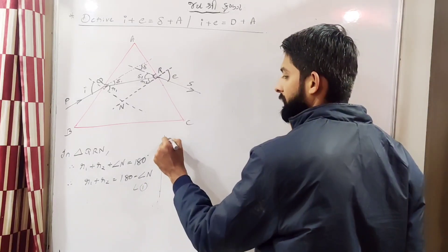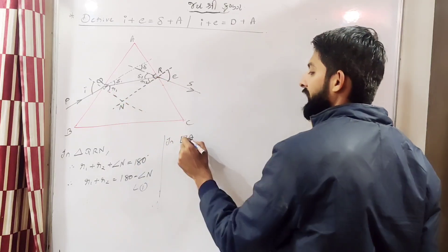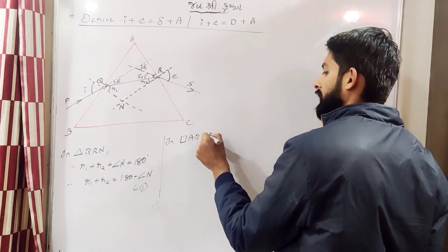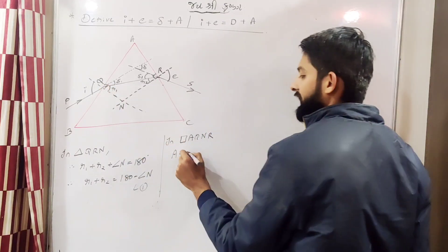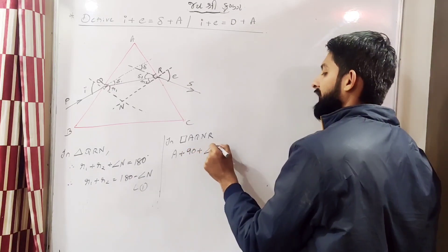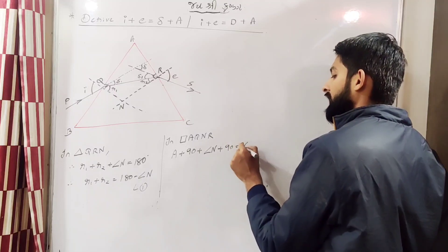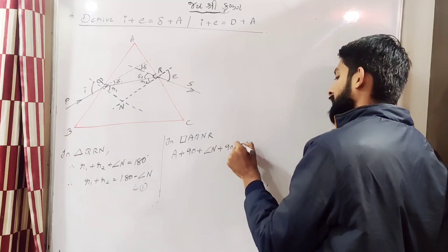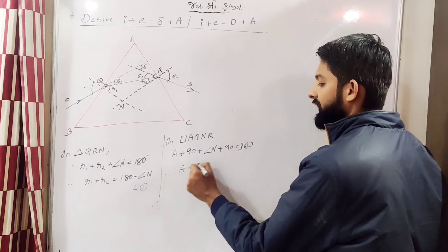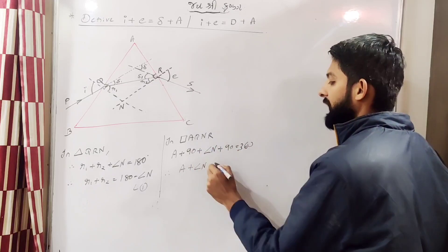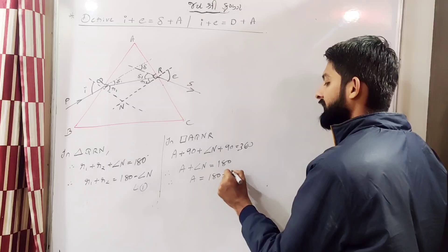Now consider the quadrilateral. In quadrilateral A, Q and R. In this you can write angle A plus this angle is 90, plus angle N plus this angle is also 90. This is quadrilateral, so summation of all four angles is 360. So A plus angle N will be 360 minus 180, so you get 180. So A will be 180 minus angle N.